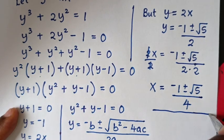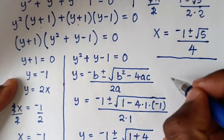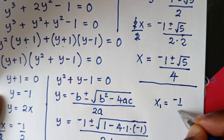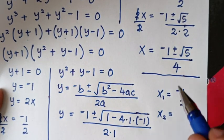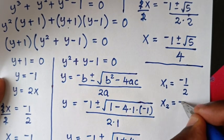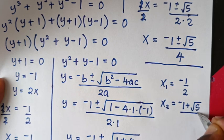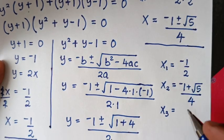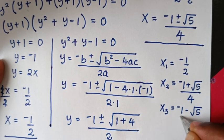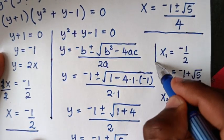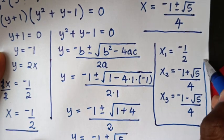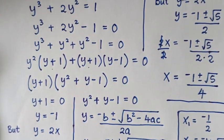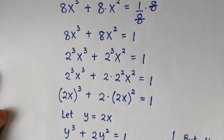In conclusion, we have three values of x: the first is x = -1/2, the second is x = (-1 + √5)/4, and the third is x = (-1 - √5)/4. Thank you for watching — don't forget to subscribe to my channel, and see you in the next video. Bye bye!